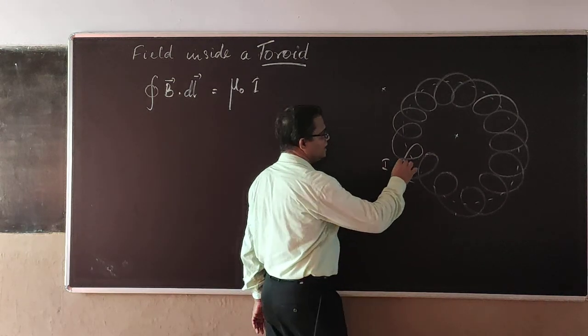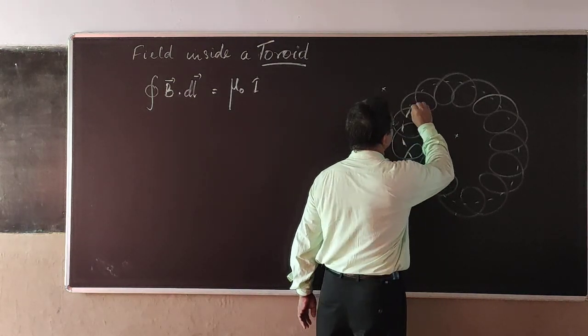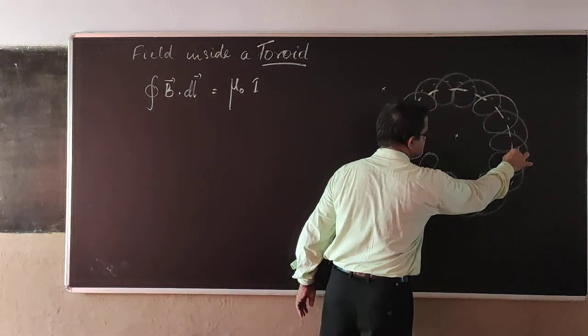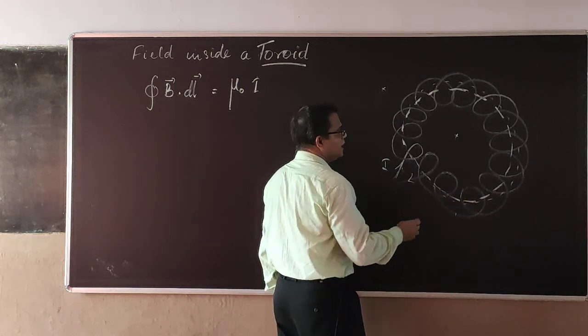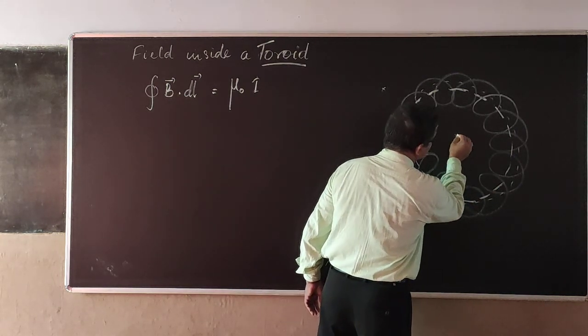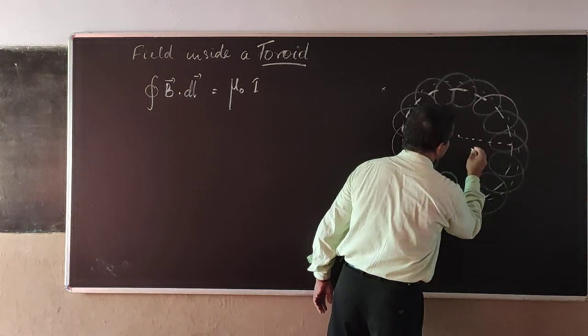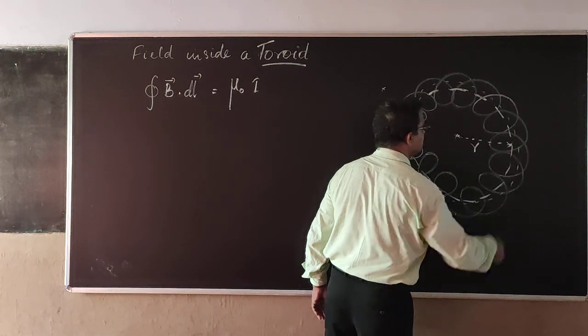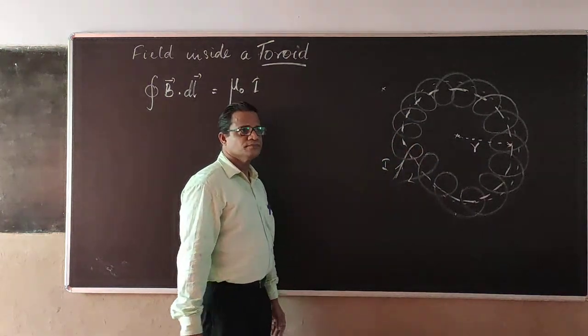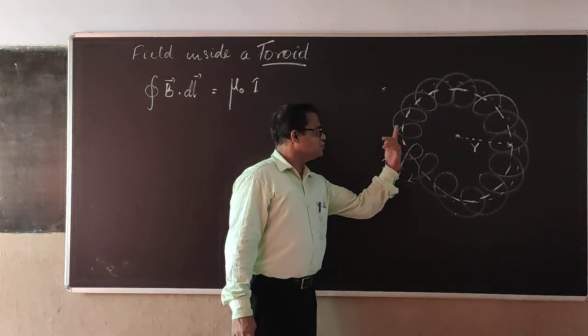So if I assume a loop here, a field loop like this, and from the center to this, let's have an average radius to be R. And I said current I is flowing through this one.